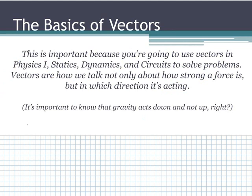Now vectors have two main components. One of them is magnitude and the other is direction. For example, it's important to know that gravity acts down and not up. So if you're going to draw a gravity vector, it goes down. So I have a 50 pound force acting down because that's my vector—it has a magnitude and a direction.